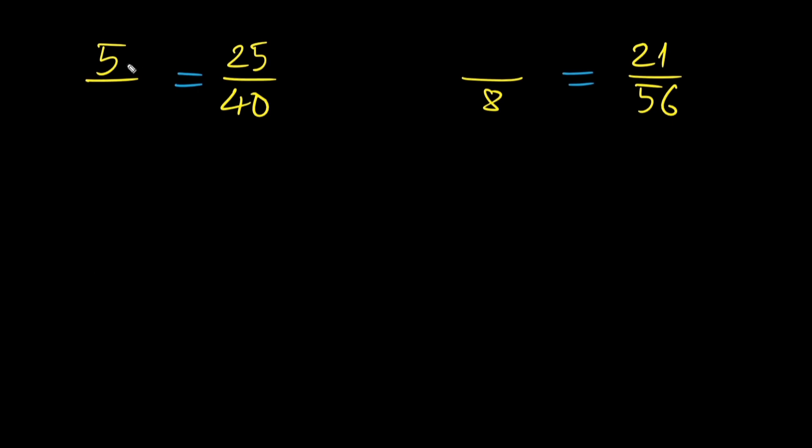25 divided by 5 is 5. So we got to multiply 5 by 5 to get to 25. What other number times 5 is 40? Or in other words, 40 divided by 5 is what number? 40 divided by 5 is 8. So the equivalent fraction here is 5 over 8, that's equal to 25 over 40.